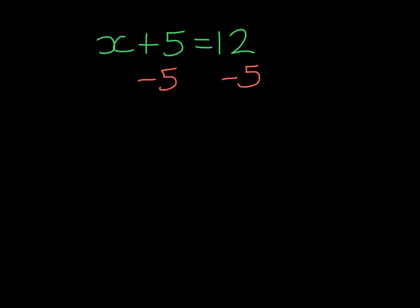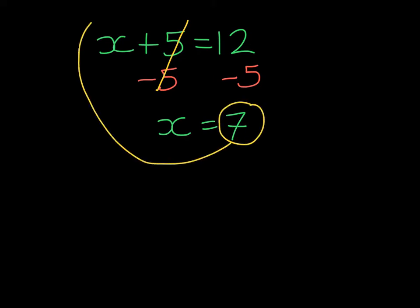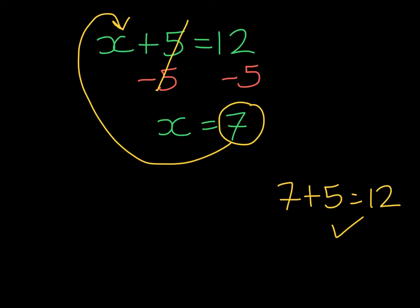If we add 5 then subtract 5 on the left-hand side, that's going to cancel. I will be left with X on the left-hand side, and on the right-hand side, 12 take away 5 is 7. At this point, we take 7, substitute it into our original equation, and see if 7 added to 5 gives me 12. And we see that it does, so it's been solved correctly.